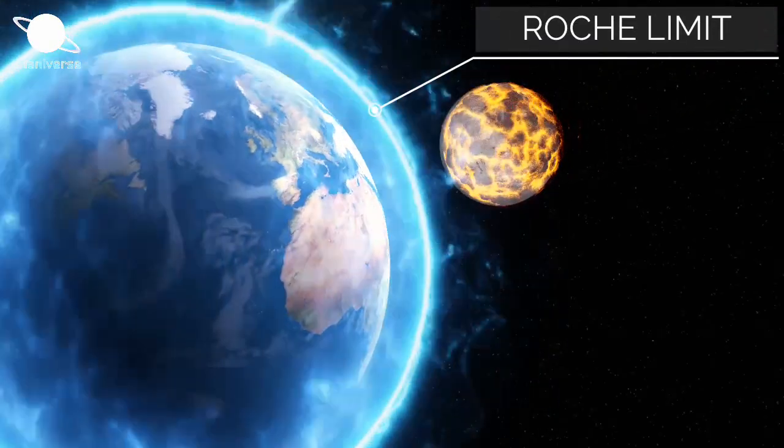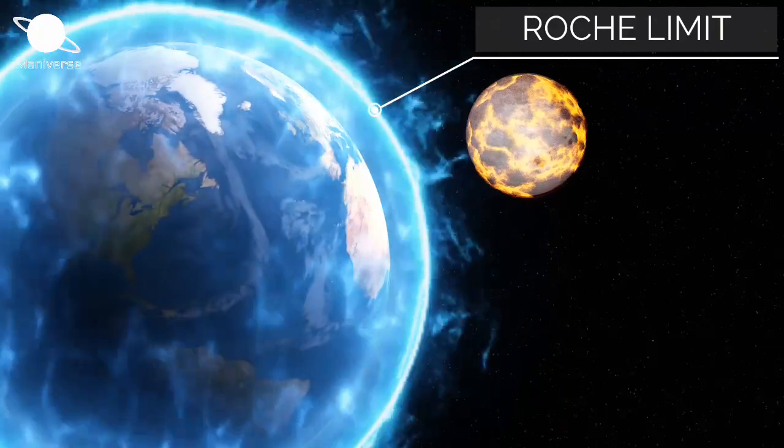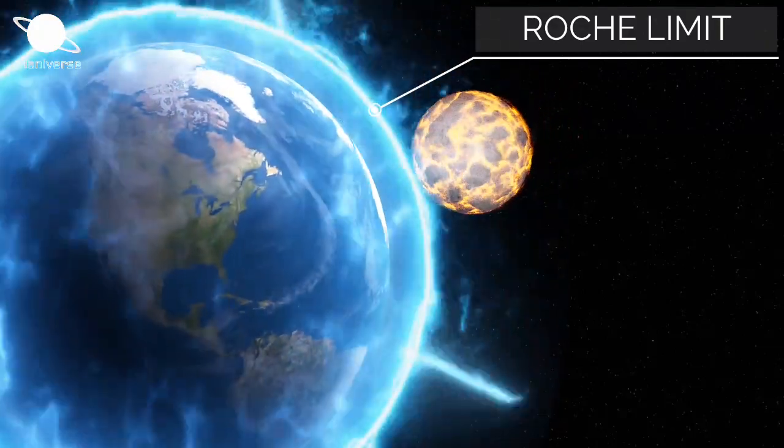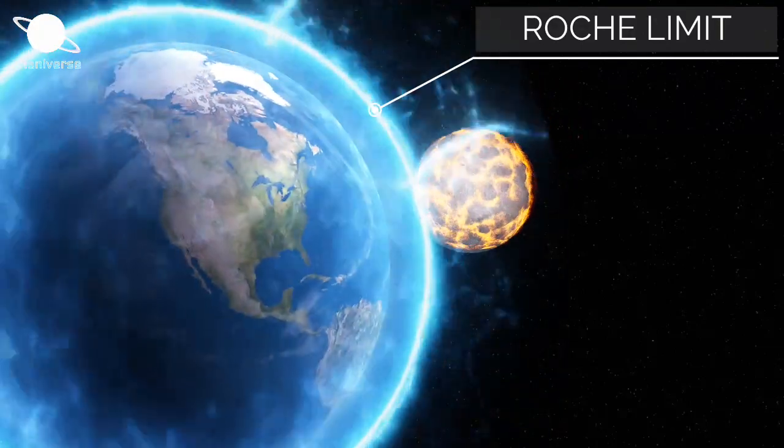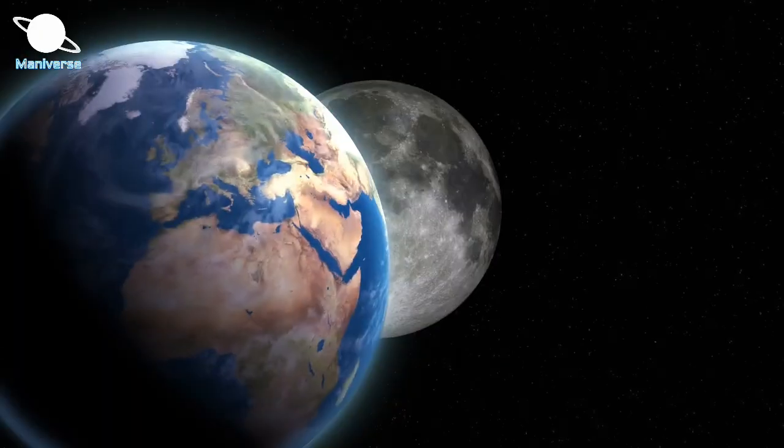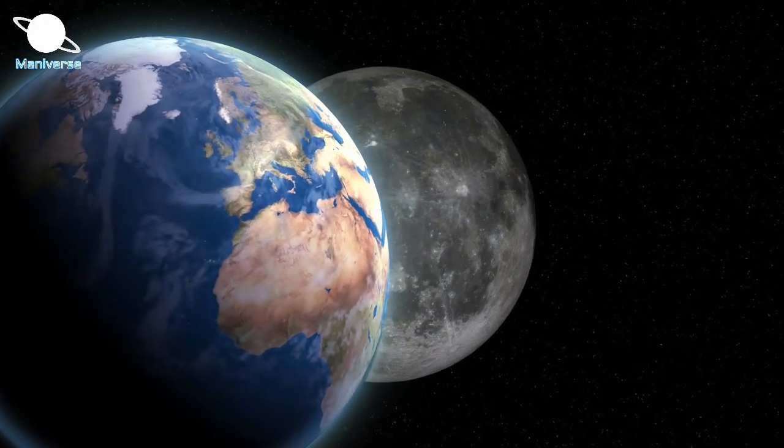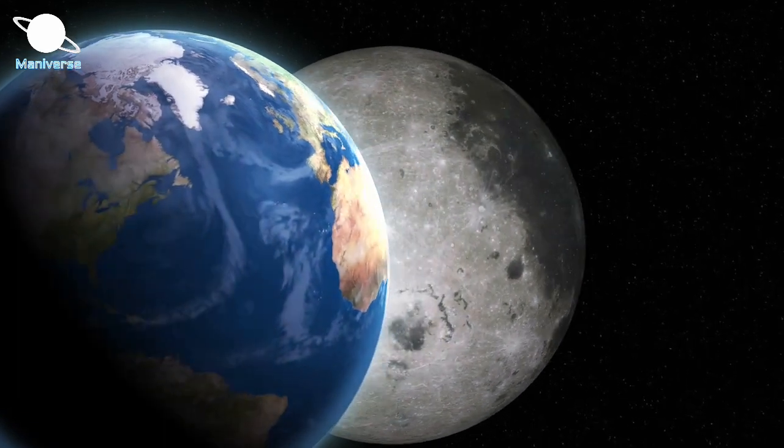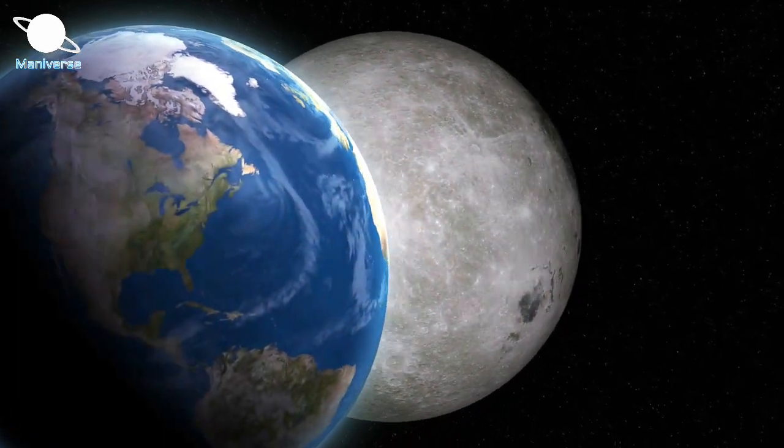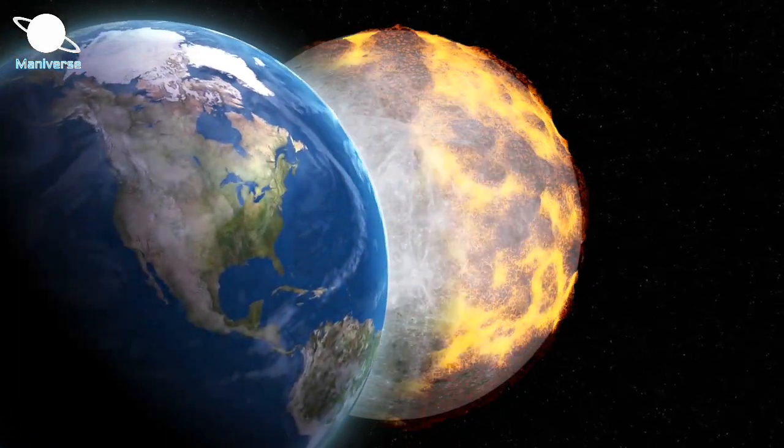Friends, every planet has its Roche Limit. It is a ledge or a boundary that protects us from the celestial objects of space. It is the minimum distance in which a large satellite or space object can approach its primary body without being torn apart by tidal forces.